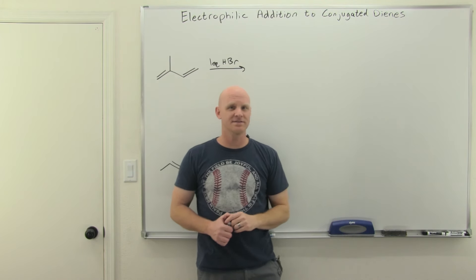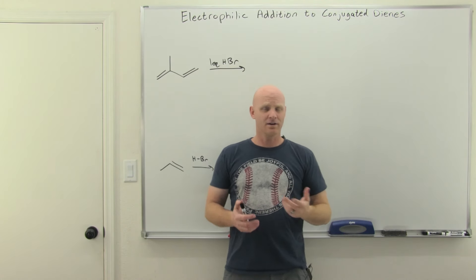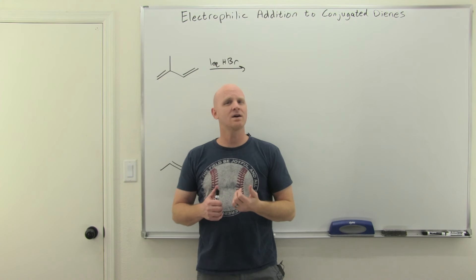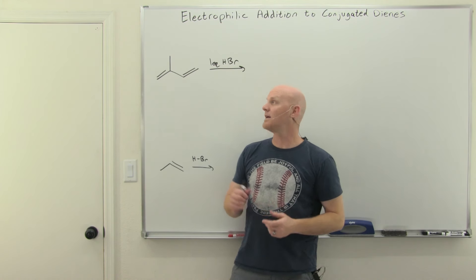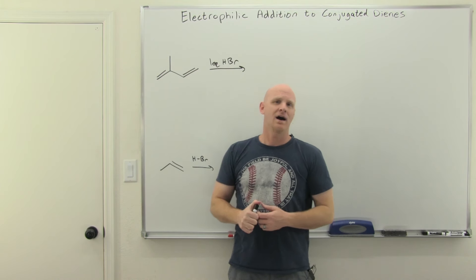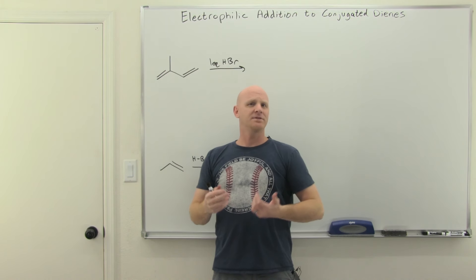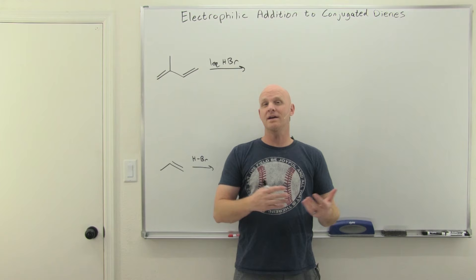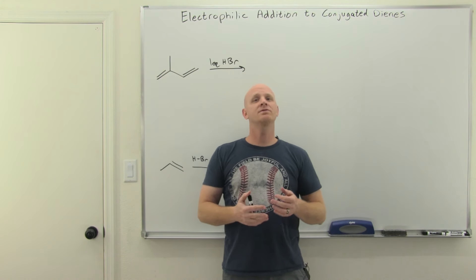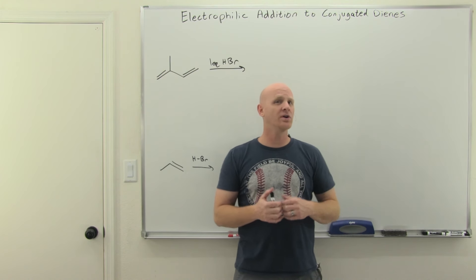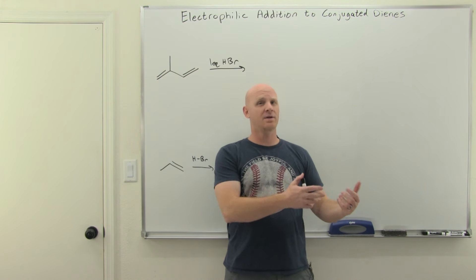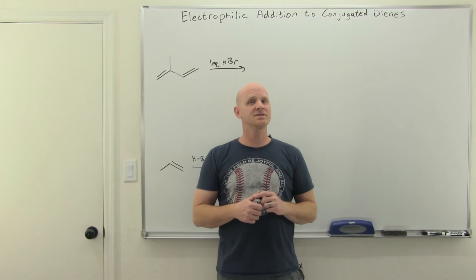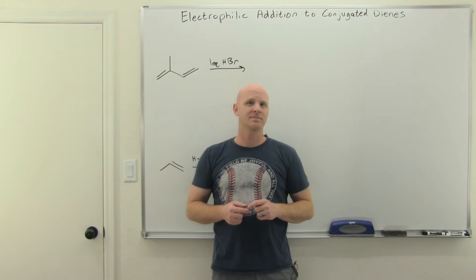Electrophilic addition to conjugated dienes is the topic of this lesson. When you do one of those alkene addition reactions with a conjugated diene, you've got a competition going on between multiple products. Depending on your conditions, one might be favored over another. We'll call one the thermodynamic product and another the kinetic product. We're going to learn how to predict them and realize under what conditions each would be the major product.